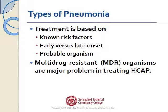Why do we differentiate between community acquired and medical acquired pneumonia? Because it's going to guide your treatment, based on the patient's known risk factors, early versus late onset, and the probable infecting organism. Multi-drug resistant organisms like MRSA, VRE, and FISA are major problems in treating healthcare-acquired pneumonia, which is one of the reasons why it's differentiated from community acquired pneumonia.